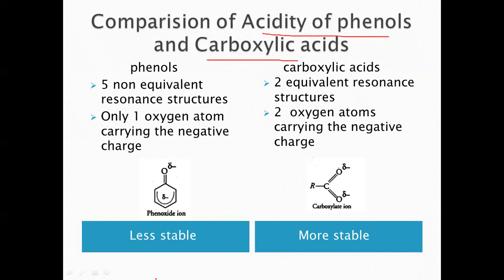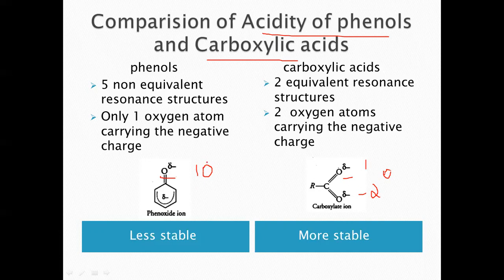Looking at the resonance structures of phenoxide ion and carboxylate anion, in the phenoxide ion only one oxygen atom carries the negative charge, while in the carboxylate anion there are two oxygen atoms sharing the negative charge. Since the more electronegative atom sharing the negative charge makes it more stable, and the carboxylate anion has two oxygen atoms versus only one in phenoxide, the phenoxide ion is less stable than the carboxylate ion.